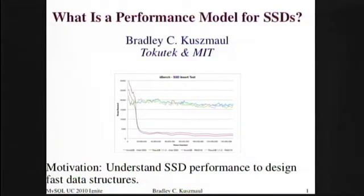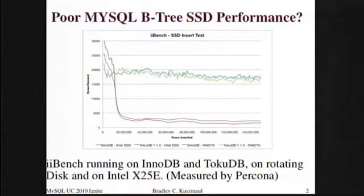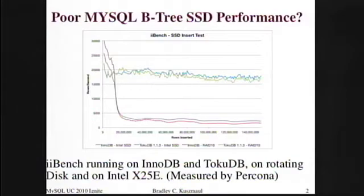Basically, this was the beginning of the Odyssey: a benchmark that Percona ran running IIBench. The top curve is TokuDB — those two curves — and one of them is the SSD and one of them is a rotating disk. And the bottom one is InnoDB.